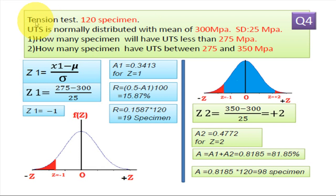Now let we consider our case. Let 120 specimen, we are doing tension test on 120 specimen. Then the ultimate tensile strength is normally distributed with mean value of 300 MPa.